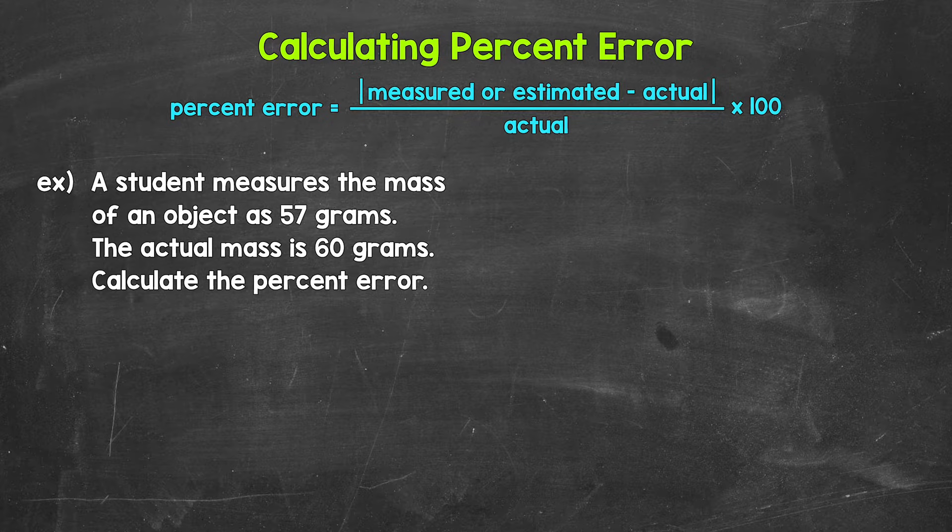Now remember, percent error is a way for us to see how accurate a measurement or estimation is relative to or compared to the actual value. Basically, it's a way for us to see how far off a measurement or estimation is expressed as a percentage.